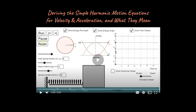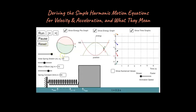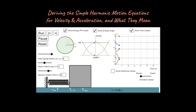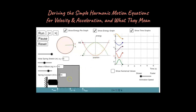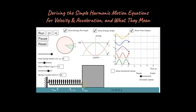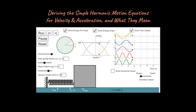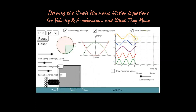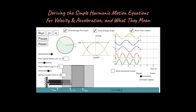What you're going to see is an object in simple harmonic motion that's moving back and forth — this is a mass on a spring system. I want to focus on the three graphs in the upper right: the yellow, the blue, and the purple — position versus time, velocity versus time, and acceleration versus time graphs. I want you to start thinking about when these things have maximums and minimums and what that means for the corresponding graph.